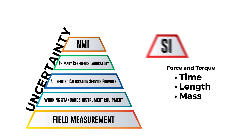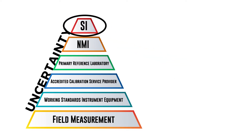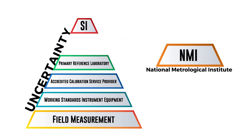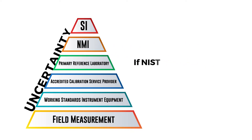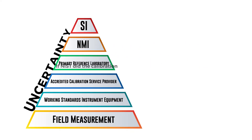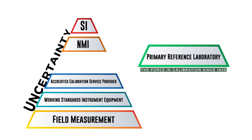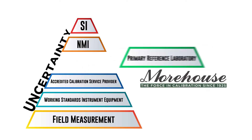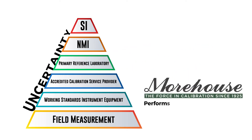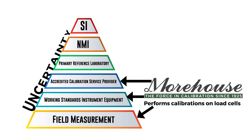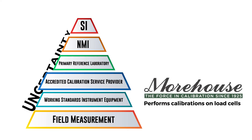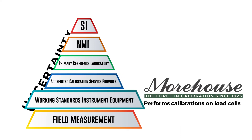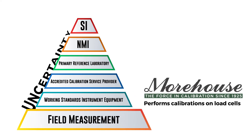The pyramid starts with SI at the top, then NMI, National Metrological Institute, like NIST. If NIST did the calibration of the force weights, then the next tier would be a primary reference laboratory like Morehouse. Morehouse performs calibrations on load cells for the lower tiers — accredited calibration suppliers, followed by working standards, who in turn calibrate field equipment.